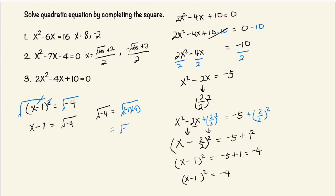That's equal to the square root of negative 1 times the square root of 4. The square root of negative 1 is i. The square root of 4 is plus or minus 2. So this is plus or minus 2 times i. So here we have x minus 1 is equal to plus or minus 2i.